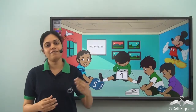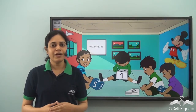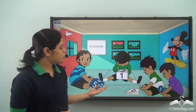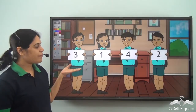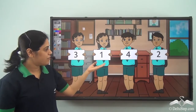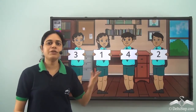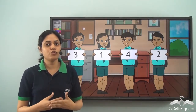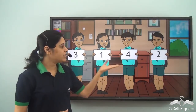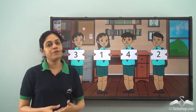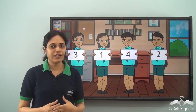Rohit was playing a very interesting game with his friends involving numbers. Each of them picked up one digit — the numbers picked were 3, 1, 4, and 2. They were supposed to make a four-digit number using these four digits, and the person who made the greatest number would win the game.